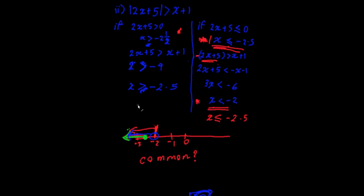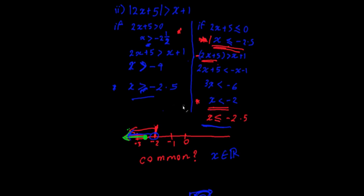Now here's the really tricky part. Think about these two solutions: one saying x is greater than minus 2.5, and the other saying x is less than or equal to minus 2.5. What does that mean? It means x can take on all real numbers — if it covers greater than minus 2.5 and also less than or equal to minus 2.5 together, all possibilities are covered.